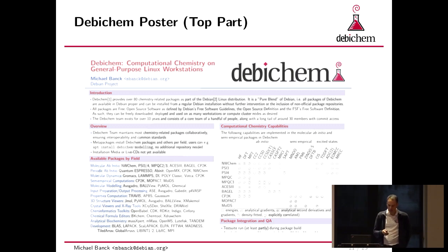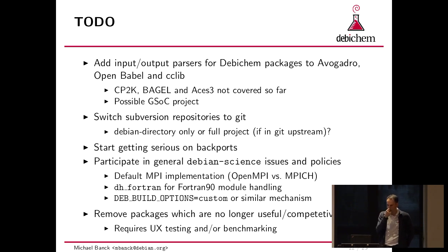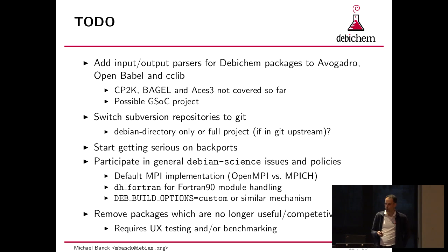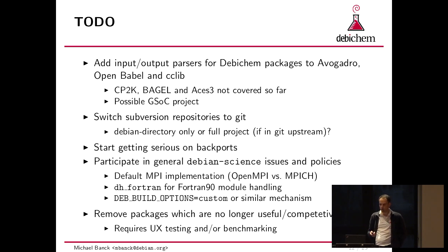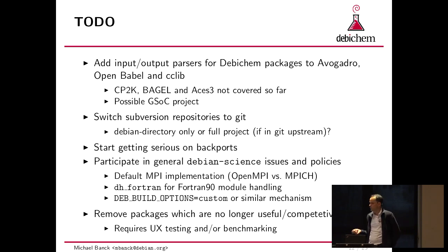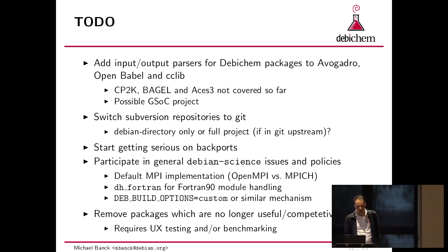Finally, I want to talk about what's left to do. One thing we should really do is have more input-output parsers for the Debian packages. We have Avogadro, which is a Qt application that can read and generate input, but it's not doing it for all the packages we have. CCLib is also in there — it's just Python so it's rather easy. Packages like CP2K, Bagel, and ACES are not really represented there. Maybe there is a Google Summer of Code project looking at that.